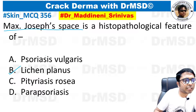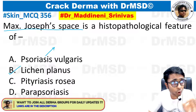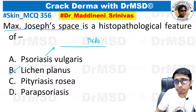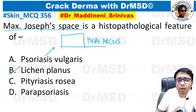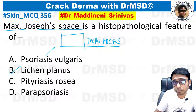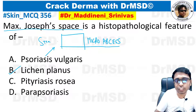A question for all of you: in psoriasis vulgaris, there is one very important named change that can occur in the stratum corneum — specifically a named micro-abscess. I am not asking about parakeratosis, which is retention of nuclei in the stratum corneum. I am asking about a named micro-abscess which can be seen in the stratum corneum. Please put your answer in the comment section.